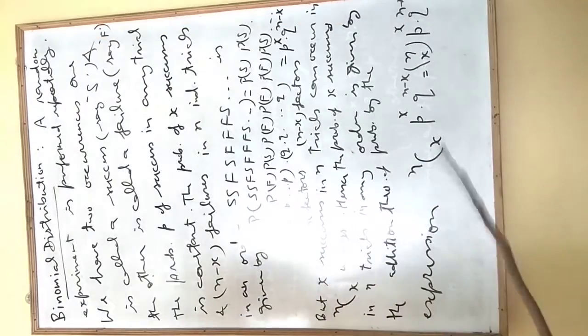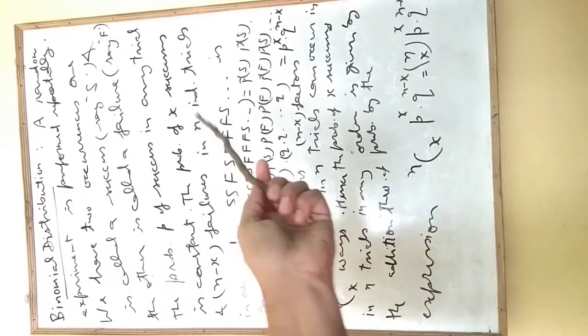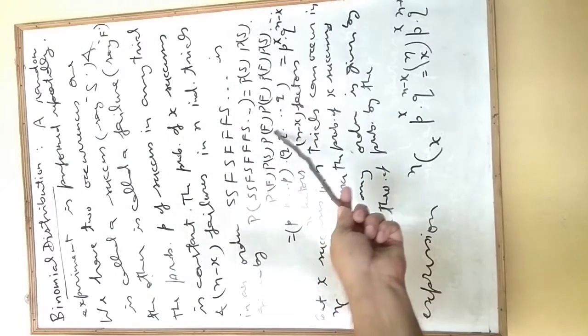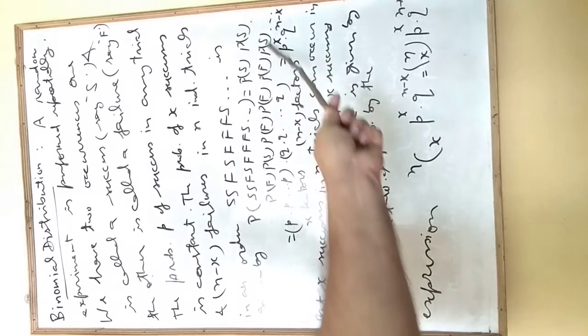It can be written as probability S times probability S times probability F times probability S times probability F times probability F times probability S and so on.